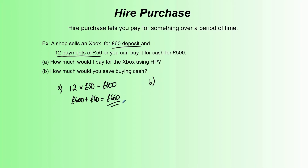That would be the total you would pay using hire purchase. The question says buying it cash would be £500, and part b asks how much you'd save buying cash. Well, £660 using hire purchase minus £500 paying cash means you would save £160 if you paid upfront using cash rather than hire purchase with monthly installments. Most times when paying over a period of time, you will pay more overall.